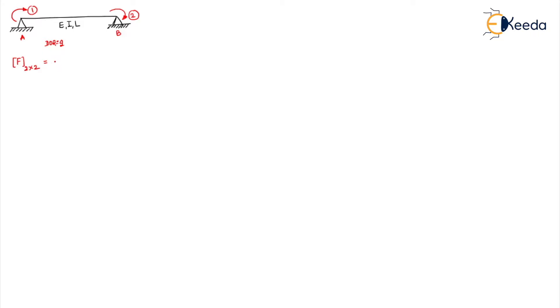The size of the flexibility matrix will be of order 2 into 2. Whatever is the number of coordinates, that will be the size of the flexibility matrix. So this will be F1,1, F1,2, F2,1, and F2,2. This is the simplest of problems. Now we have to first get the elements for the first coordinate.